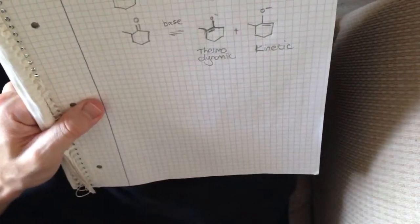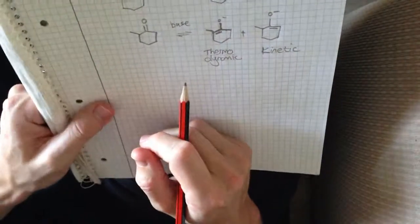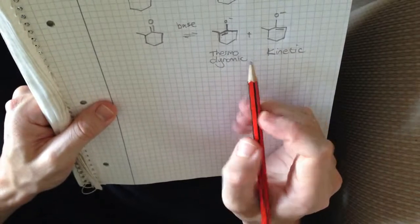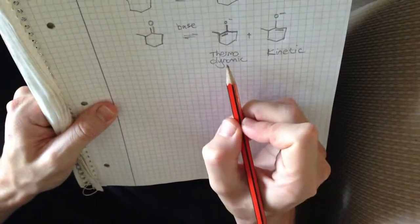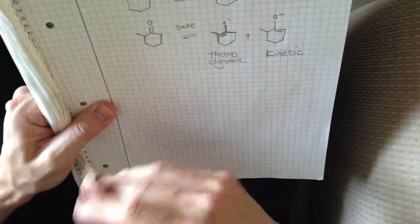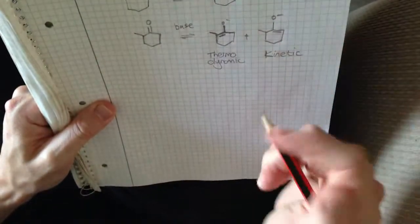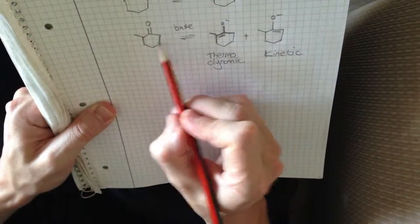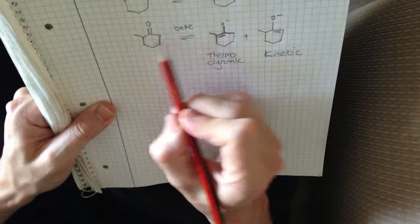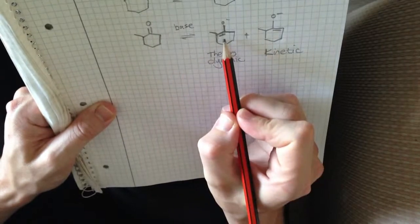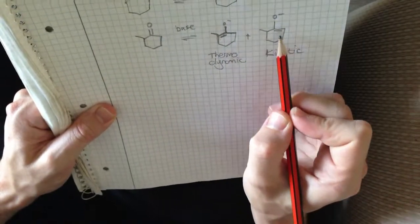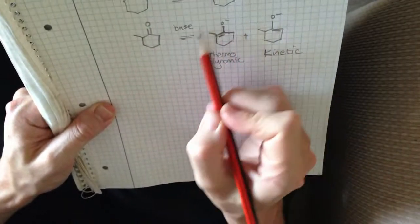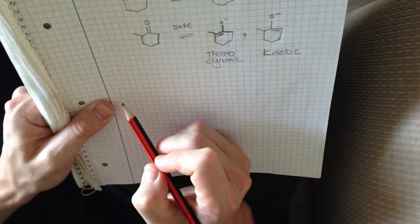And all we need to learn is to be able to deal with things like this is just to understand under what conditions each one can be formed. The thermodynamic enolate has everything to do with using a very weak base. And it's about a reaction that is in equilibrium. In other words, what will happen is, if you use a weak base, you'll form this, maybe you form this enolate over here, but this one can go back to the starting material. And eventually, over time, this will be the predominant enolate that will be formed.